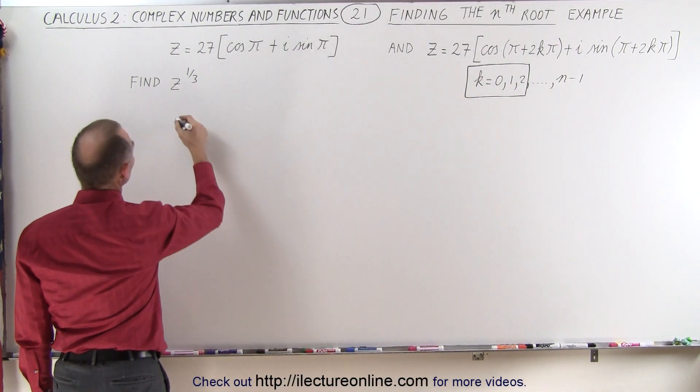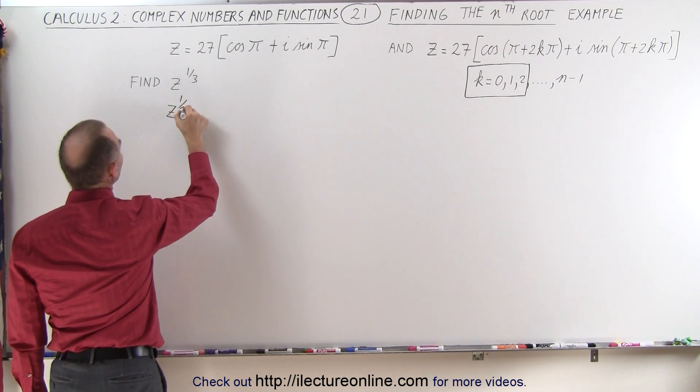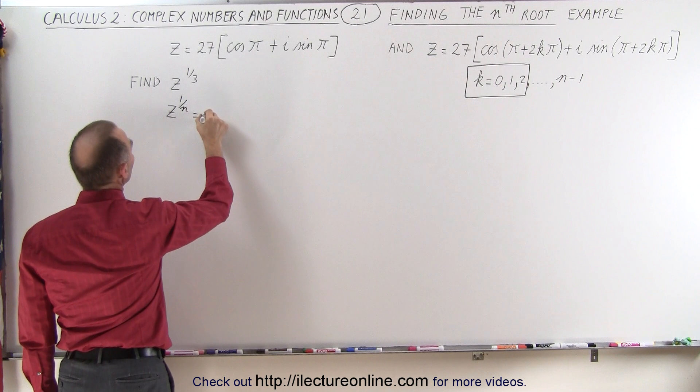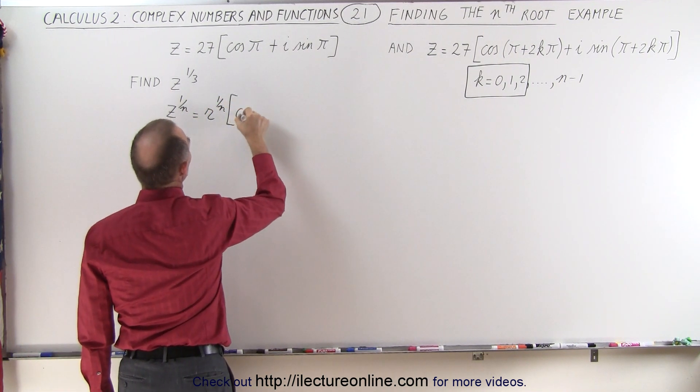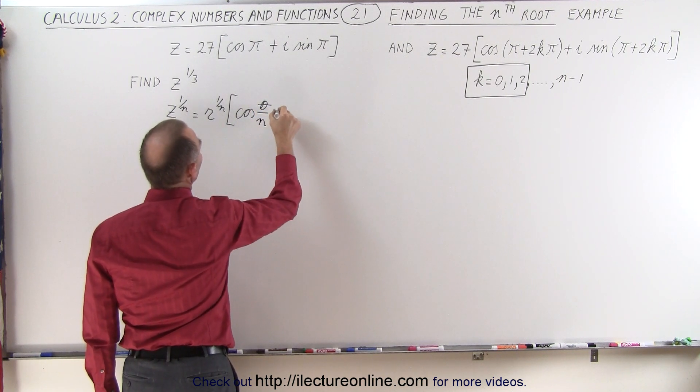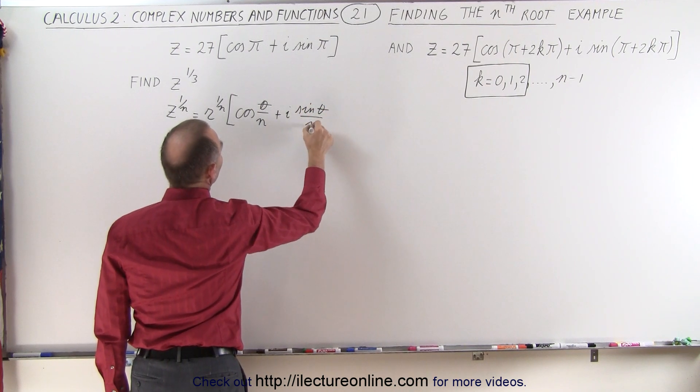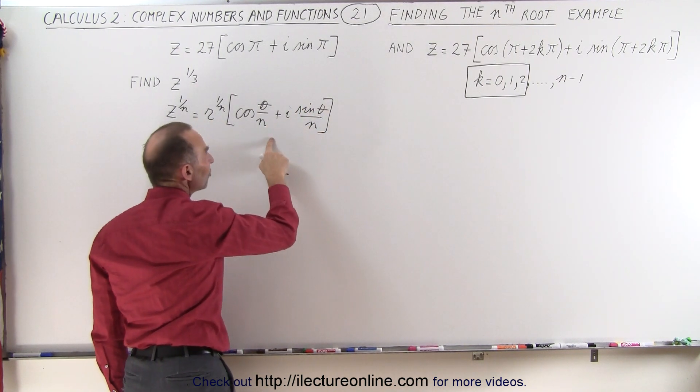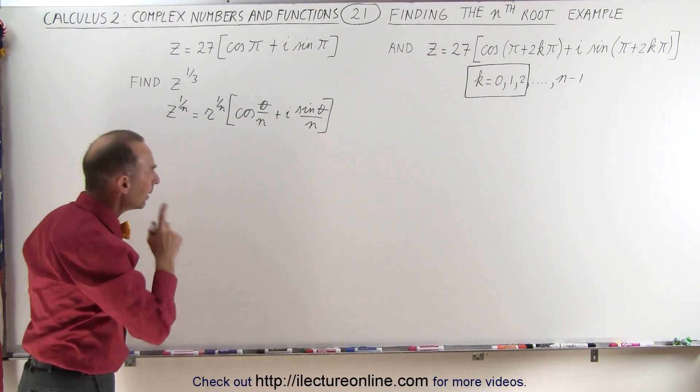So the general form of the root is as follows. It is z to the 1 over n power equals r to the 1 over n power times the cosine of the angle θ divided by n plus i times the sine of the angle divided by n. And of course we have to do it multiple times, each time adding something to the angle.